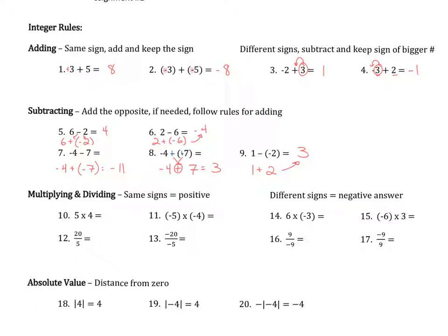With multiplication and division, if the two things being multiplied or divided have the same signs, your answer is always going to be positive. For examples 10 through 13: positive 4 times positive 5 is 20, and even negative 5 times negative 4 still gives a positive 20 — negative times negative is positive. Similarly, 20 divided by 5 is 4, and negative 20 divided by negative 5 is also 4.